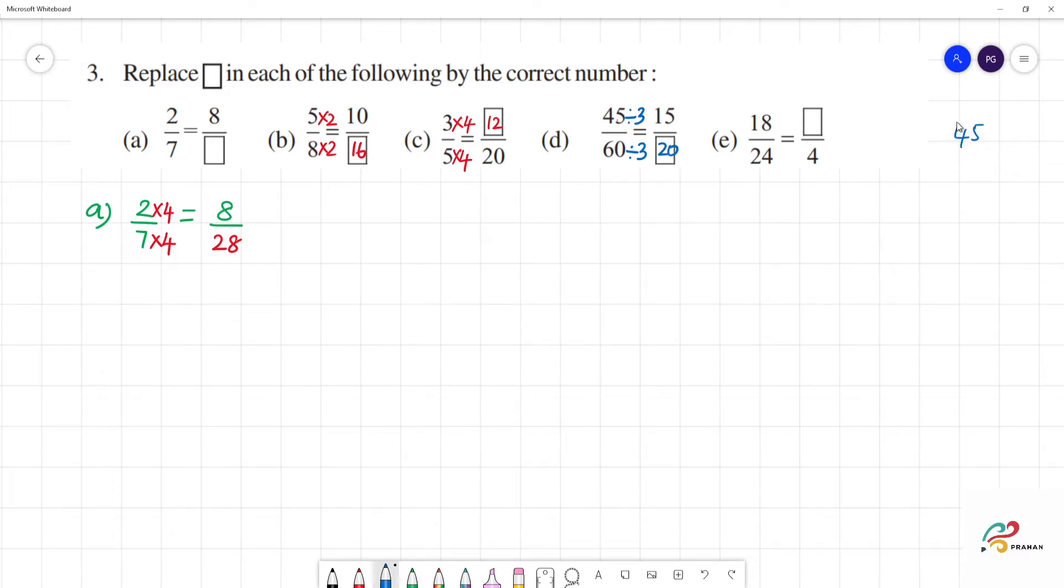Here, 45 divided by 3 is 3. 1, 3 is 3. 1, 5, 5, 3 is 15. So, 15 divided by 3.